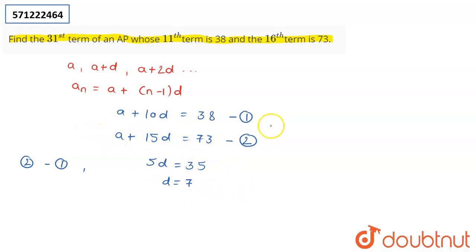Now, if you put the value of d is equal to 7 in the first equation, you will find out that the value of a is going to be a plus 70 is equal to 38, or the value of a is minus 32.